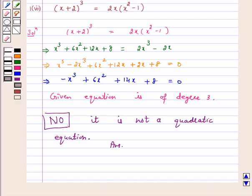Because for a quadratic equation, we need the highest power of x as 2. I hope the question is clear to you. Bye and have a good day.